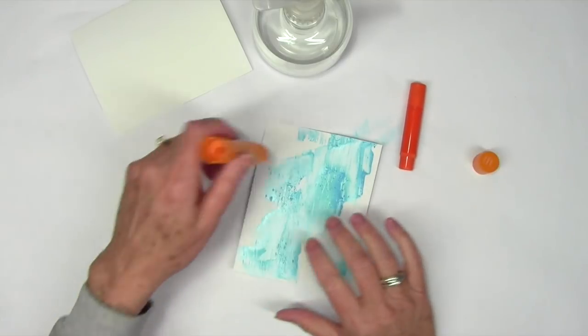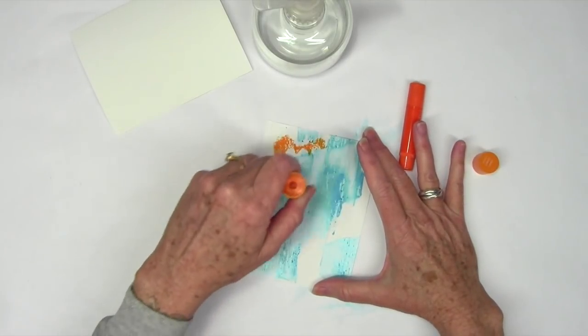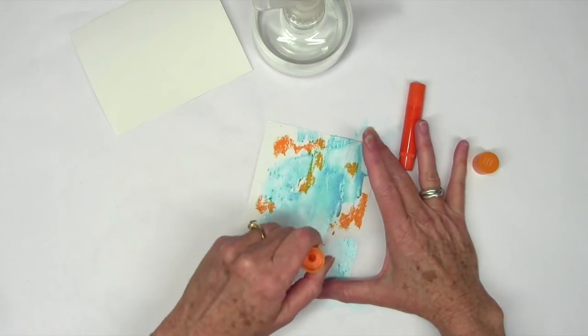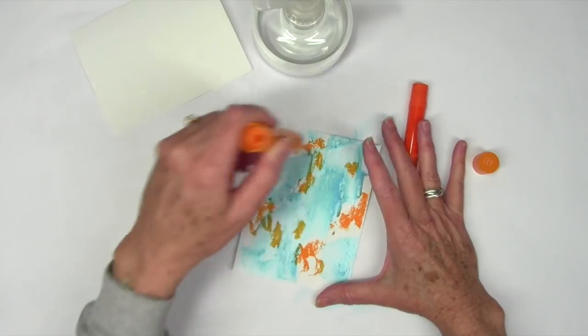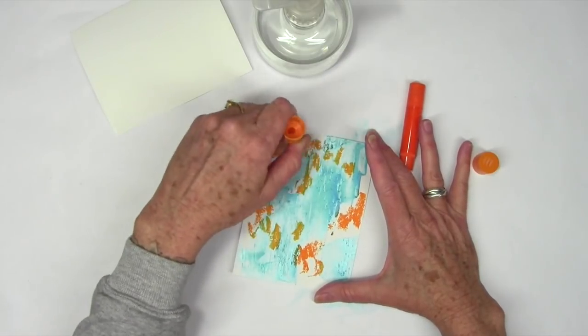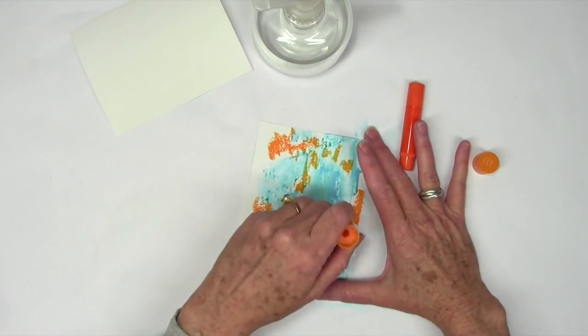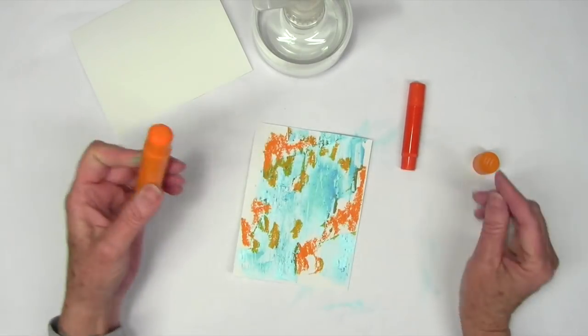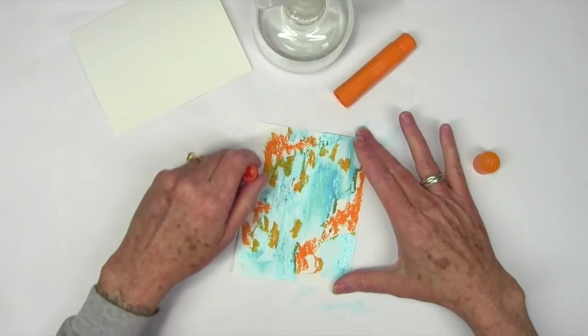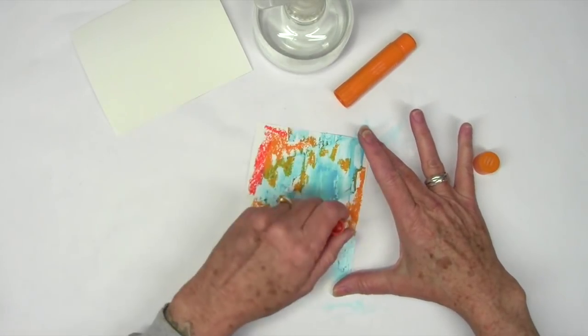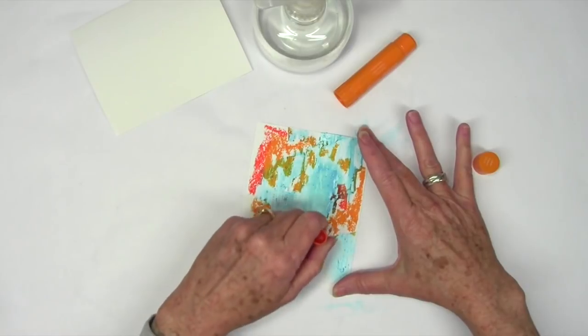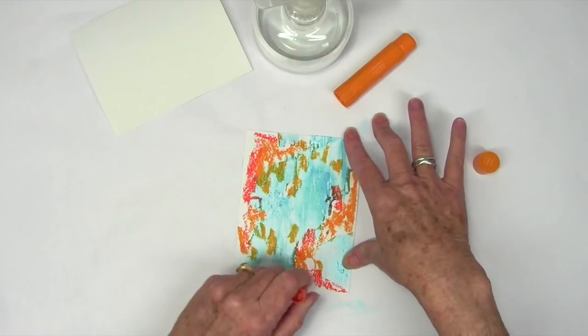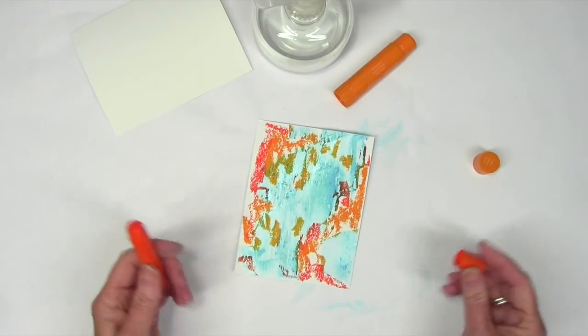I'm going to start adding color with some more Gelatos. I'm just going to go over some of these areas knowing that it's going to catch in some and maybe not in other areas. I love contrasting colors so blue and orange, since they're opposites on the color wheel, they're great contrasting colors. That's how you can tell your opposites.